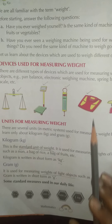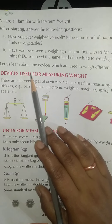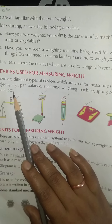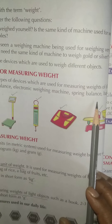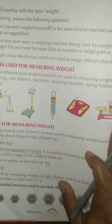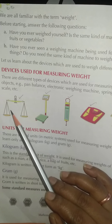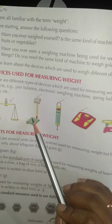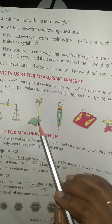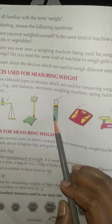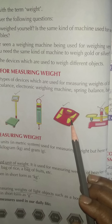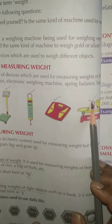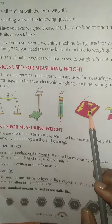Let us learn about the devices used to weigh different objects. There are different types of devices used for measuring weights of different objects — for example, a pan balance, an electronic weighing machine, a spring balance, and a bathroom scale. The pan balance is used for fruits and vegetables, the electronic weighing machine for heavier objects, and the bathroom scale is used for measuring the weight of a person.